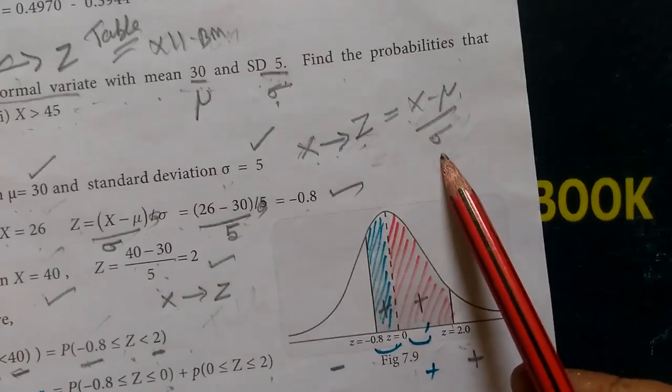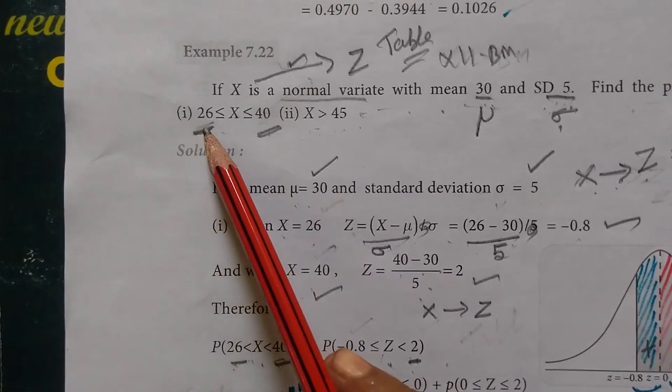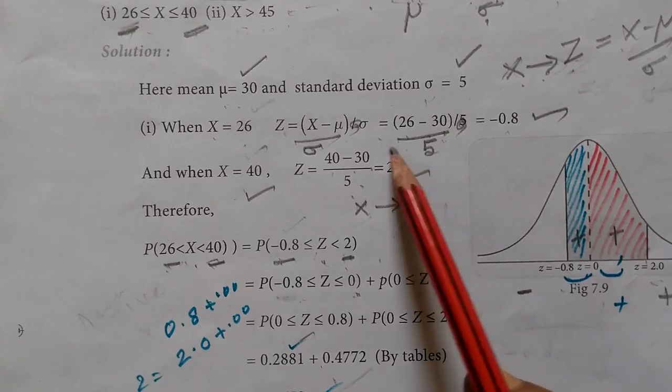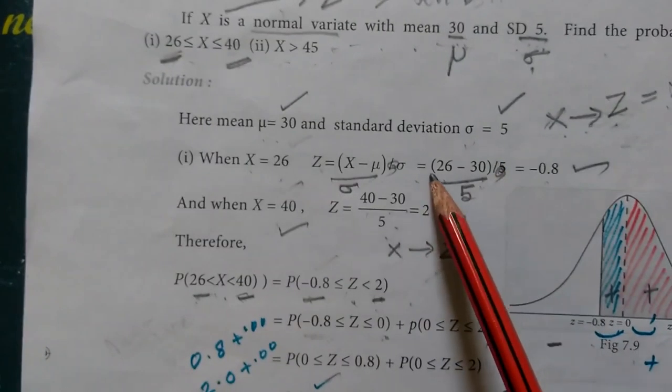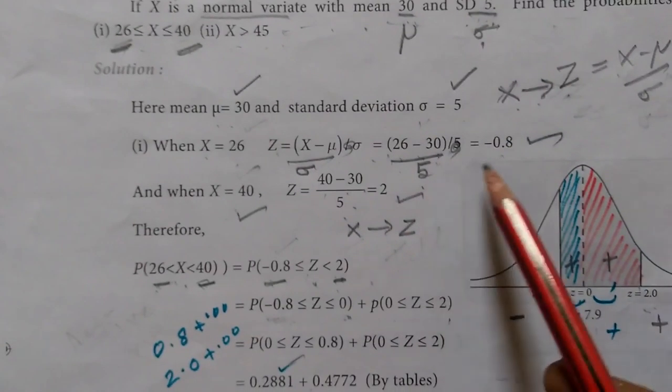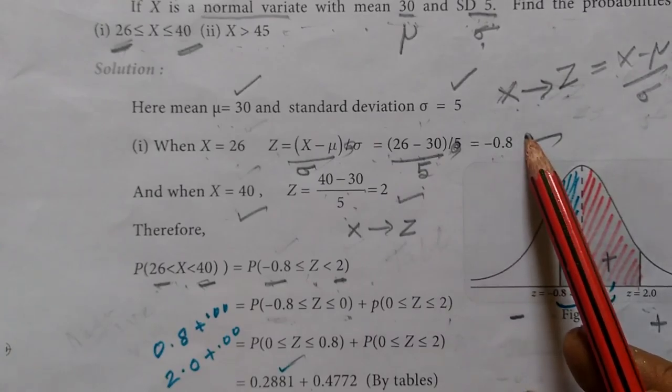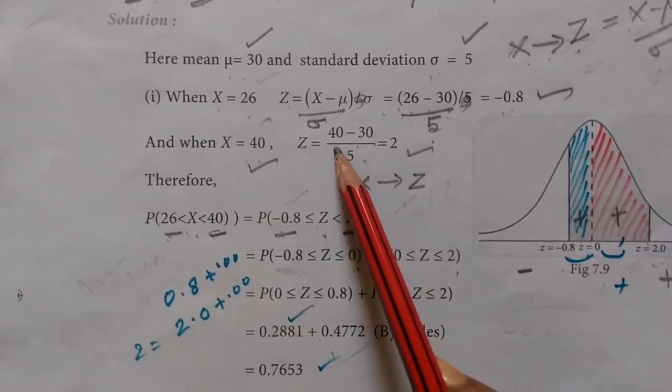When X equals 26, Z equals (X minus μ) by σ equals (26 minus 30) by 5 equals minus 0.8. And when X equals 40, Z equals (40 minus 30) by 5 equals 2.